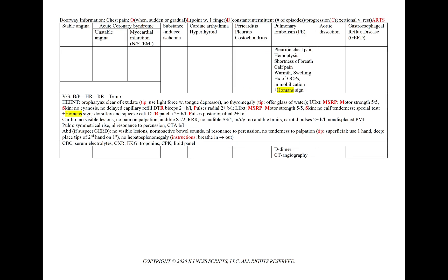In pulmonary embolism, we'll see pleuritic chest pain, hemoptysis or a productive cough, shortness of breath, calf pain, warmth and swelling, a history of oral contraceptives or immobilization, and as we'll see in our physical exam, a positive Homan's sign. We'll add a D-dimer and CT angiography.